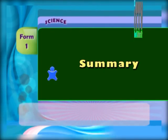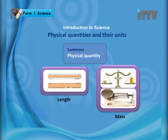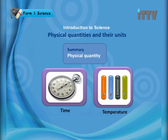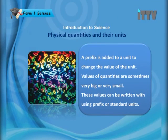You have reached the end of the exam lab. Let's do a quick summary of today's lesson. The five main physical quantities are: length, mass, time, temperature, and electric current. A prefix is added to a unit to change the value of the unit. Values can be very big or very small and can be written using prefixes or standard units.